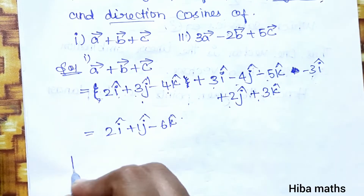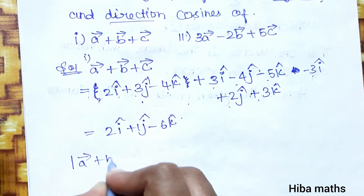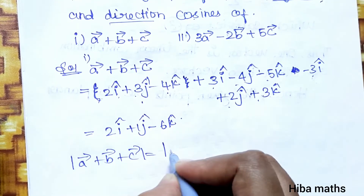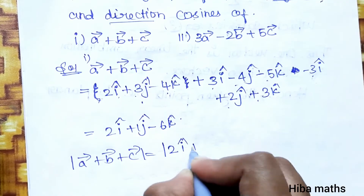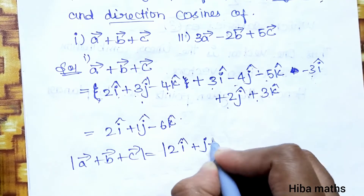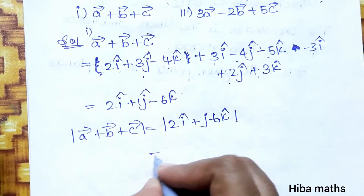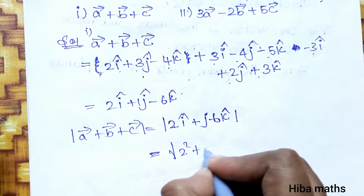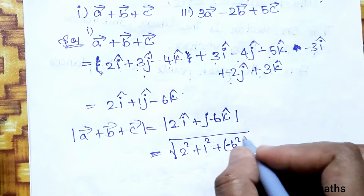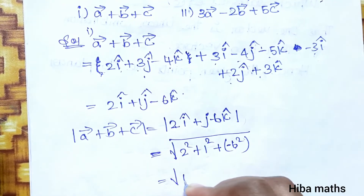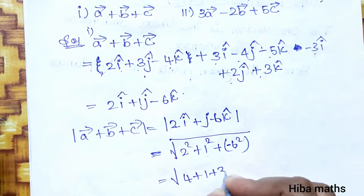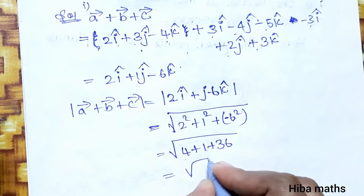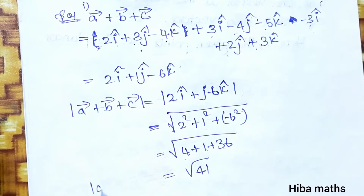The magnitude — modulus of vector a + vector b + vector c — is equal to the magnitude of 2i + j − 6k. So this is the square root of 2² + 1² + 6², which is √(4 + 1 + 36) = √41. This is the magnitude value.